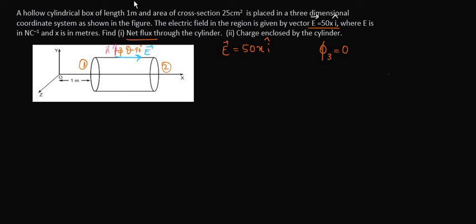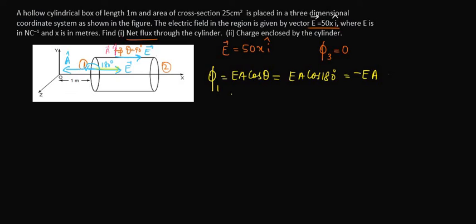Now let us calculate the electric flux on the first surface. Phi 1 will be equal to E times A times cos theta. Here, the electric field is in the x direction, and the area vector is perpendicular to the first surface — pointing in the negative x direction. So the electric field and area vector make an angle of 180 degrees, giving flux equal to minus E times A.